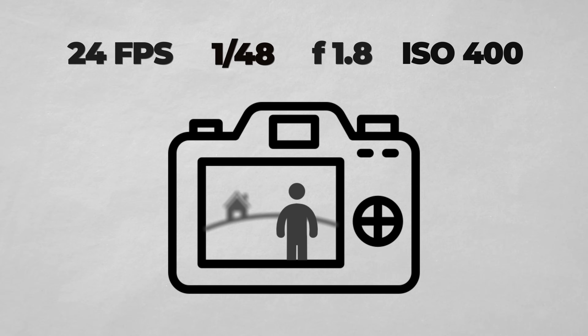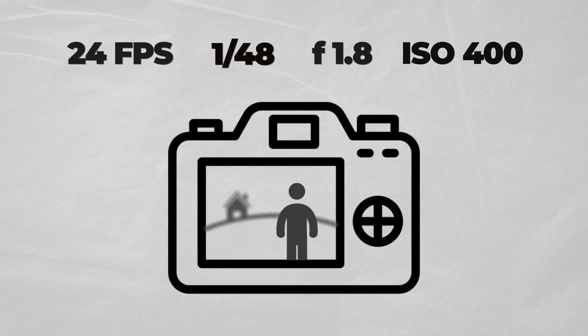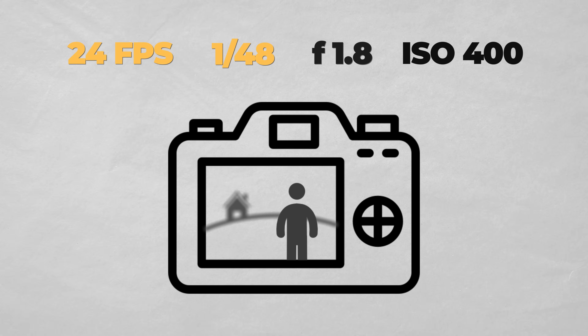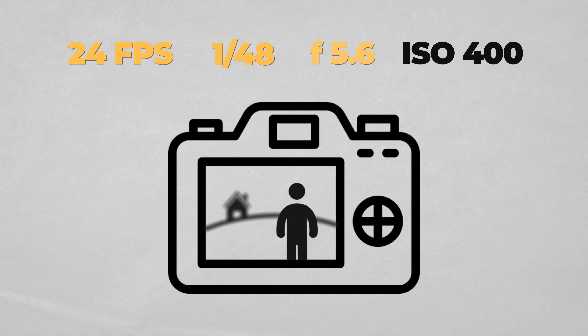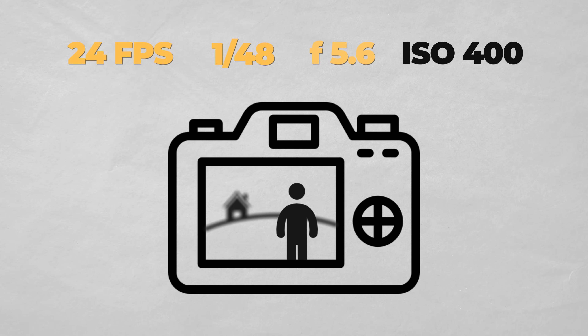For example, I generally try to keep my shutter speed at that 180-degree shutter rule. So if it's too bright out, I may have to compensate by having a slightly narrower aperture to get the image a little bit darker, even though that changes how blurry my background is and maybe changes my vision of the shot.